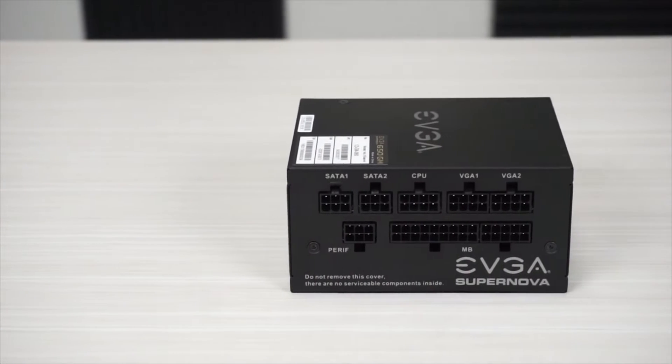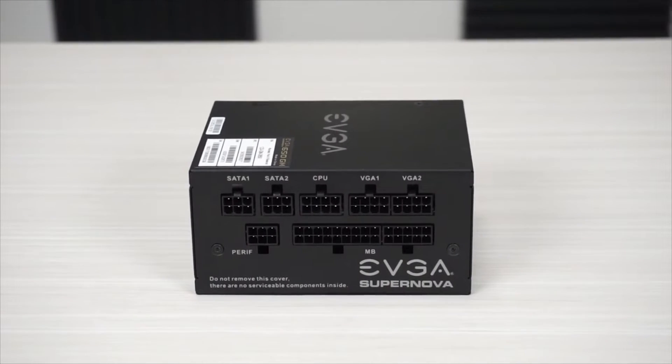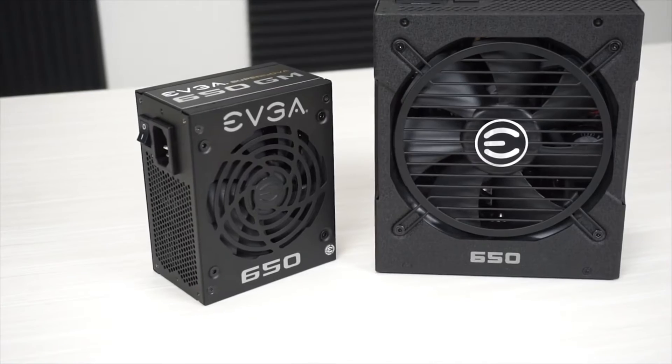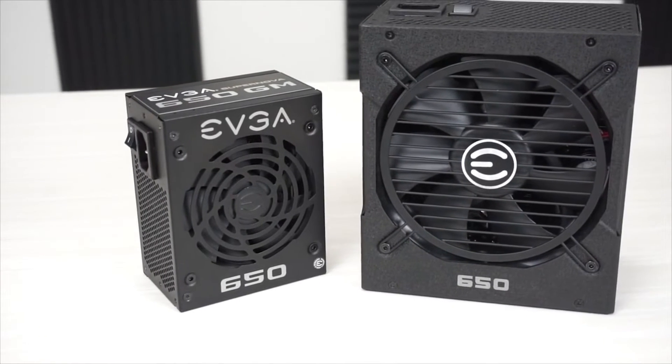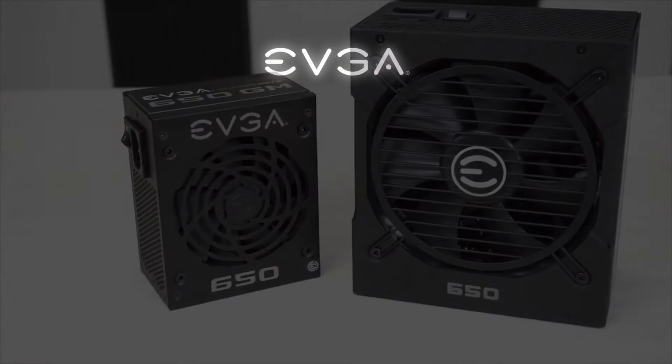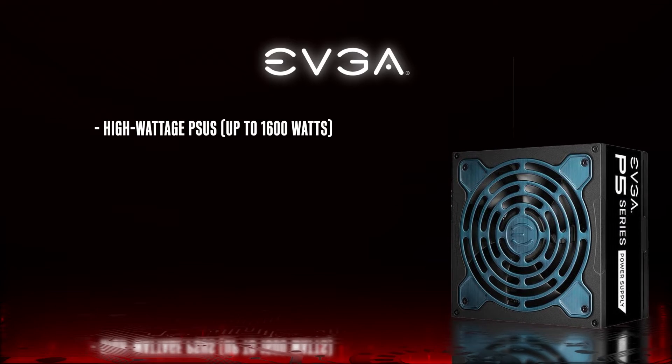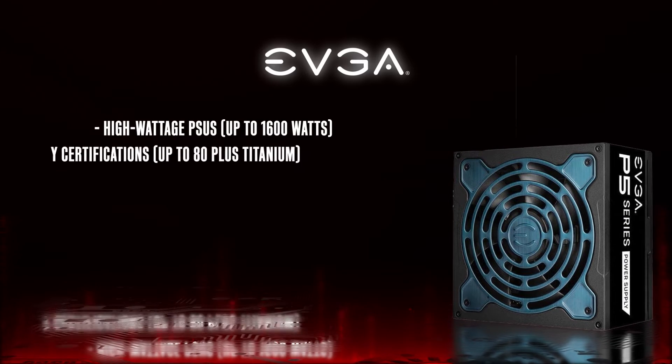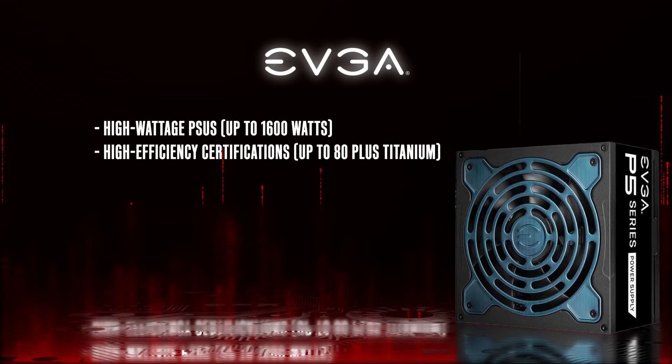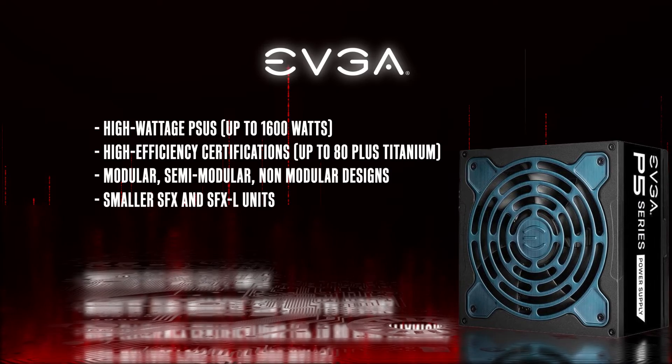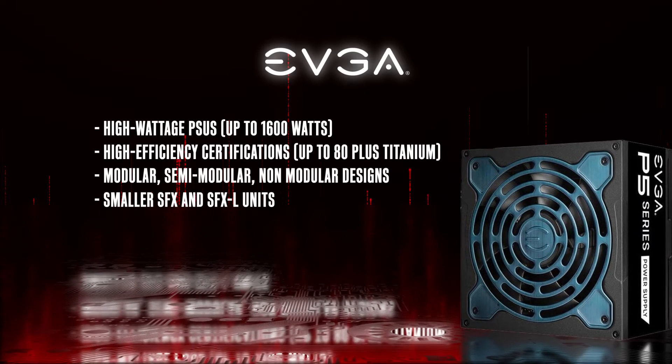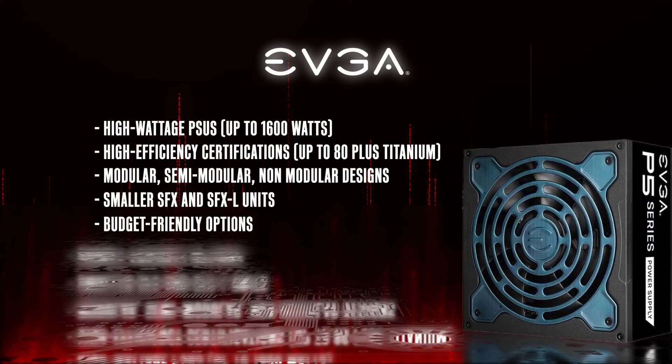In terms of PSU selection, EVGA takes a similar approach as Corsair, meaning fewer products but higher quality. Unlike Corsair, however, you can find some extremely budget-friendly offerings in their lineup. Their whole lineup includes high-wattage PSUs up to 1,600 watts, high-efficiency certifications up to 80-plus titanium, modular, semi-modular, non-modular designs, smaller SFX and SFXL units, and budget-friendly options.